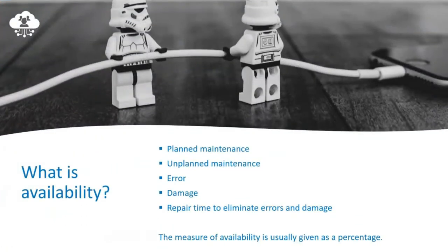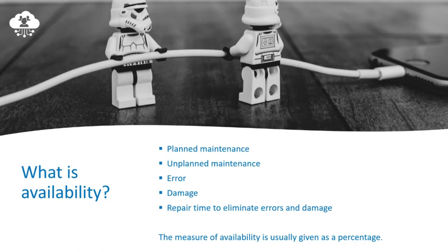If we think about availability, it is defined as the proportion of available services in the total number of services. So we can see availability as a quality criteria and sort of a measure for a specific system — an application, a service, and so on. In the upcoming sections, we will explain all the different methodologies and things you can do to have availability options in your Azure environment. We need to think about how we handle planned maintenance, errors in your application, and the repair time needed to eliminate errors and damage.